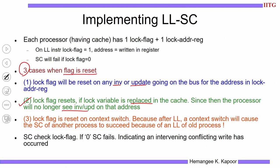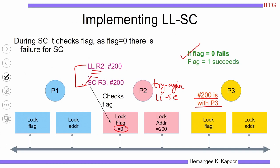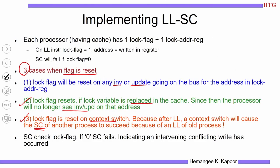On context switch, another process running on the same processor might execute SC on the same address and succeed — even though that process never executed the LL. The LL-SC pair must be process-specific, so whenever a context switch happens, the flag is reset. Overall, when SC executes, it checks the flag: if flag is 0, SC fails; if flag is 1, SC succeeds. That is how the LL-SC pair is implemented.